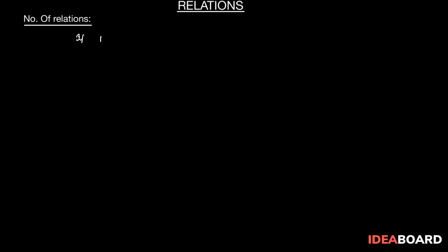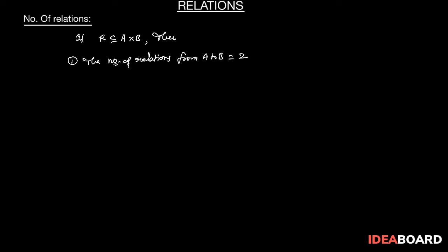If R is a relation from A to B, then first: the number of relations from A to B is equal to 2 power n(A) into n(B).